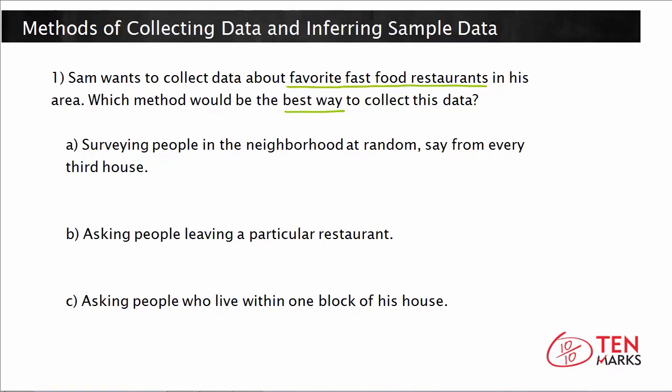A population in general can have too many sources. What if Sam's town is really large? Sam can't possibly interview all the people. But to perform a survey, he can just take a sample from the population. The best way to collect data is to use random sampling, where you select people at random from the population, so you get data from all types of sources in the neighborhood.